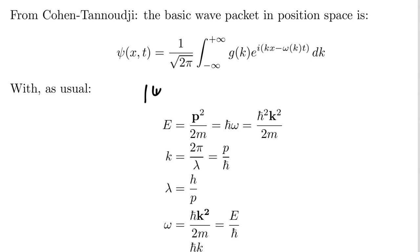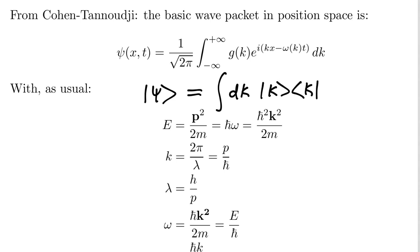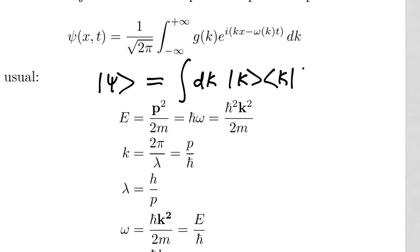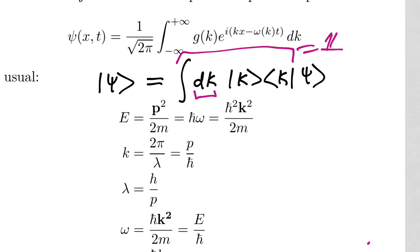Let's walk through the Dirac formalism here. We start with the state |ψ⟩ in ket space, and we insert the completeness operator — the UCOSI operator — integrating over a complete set of momentum basis states |k⟩. We know that integral of |k⟩⟨k| dk equals the identity operator, so this is a completely legal move.